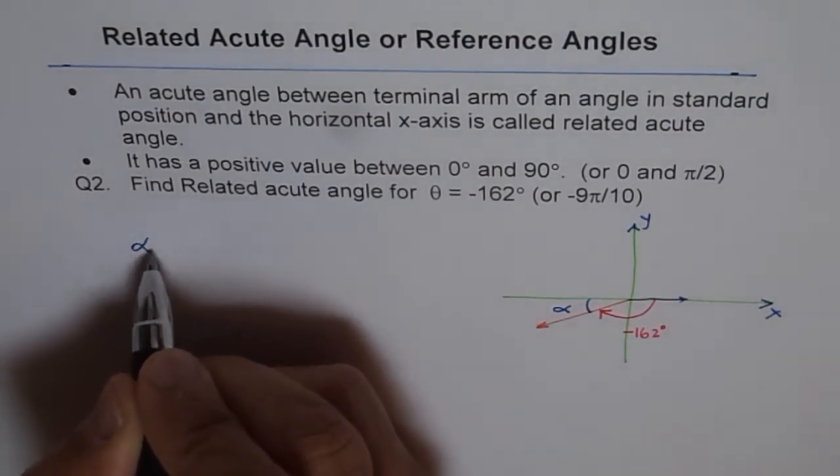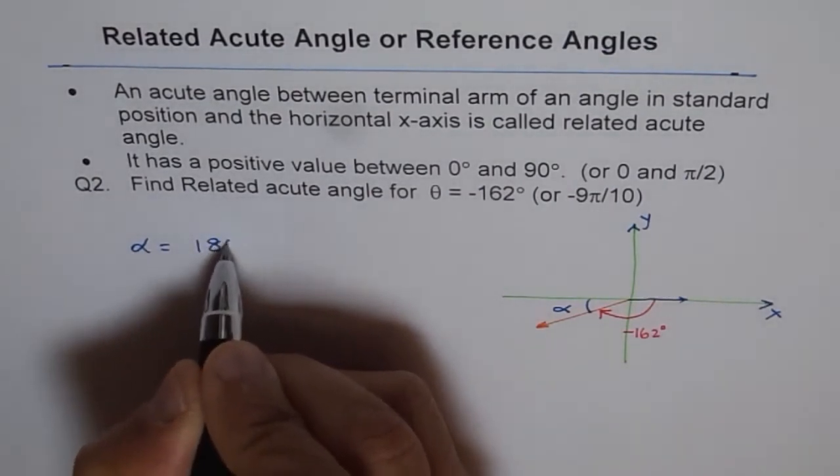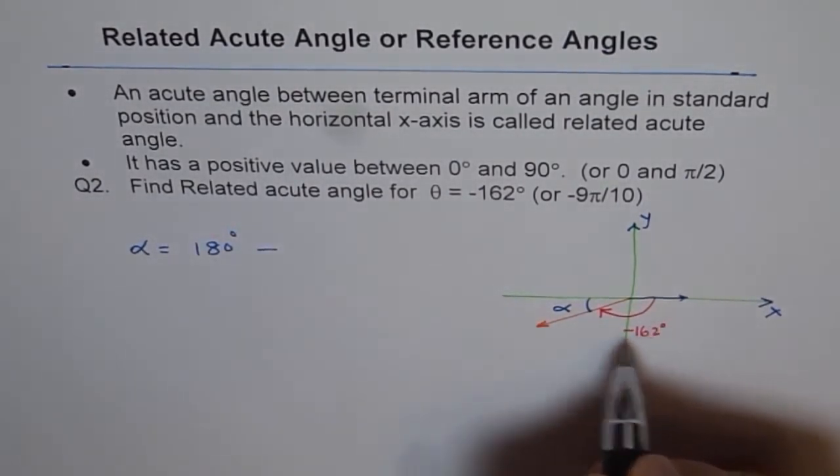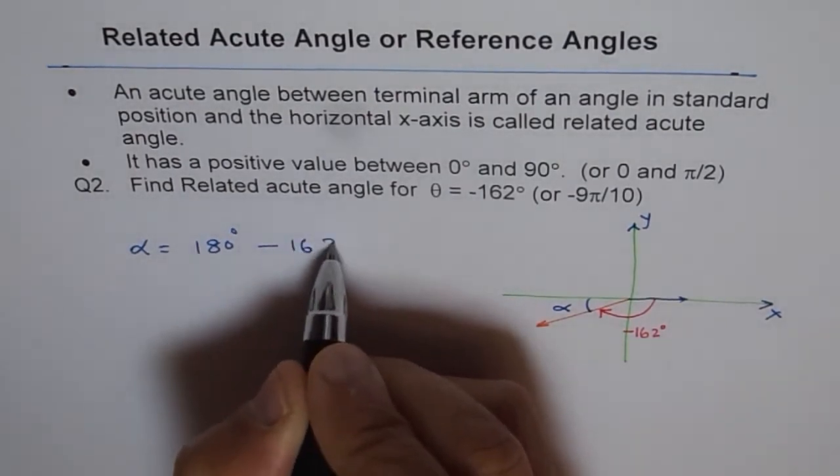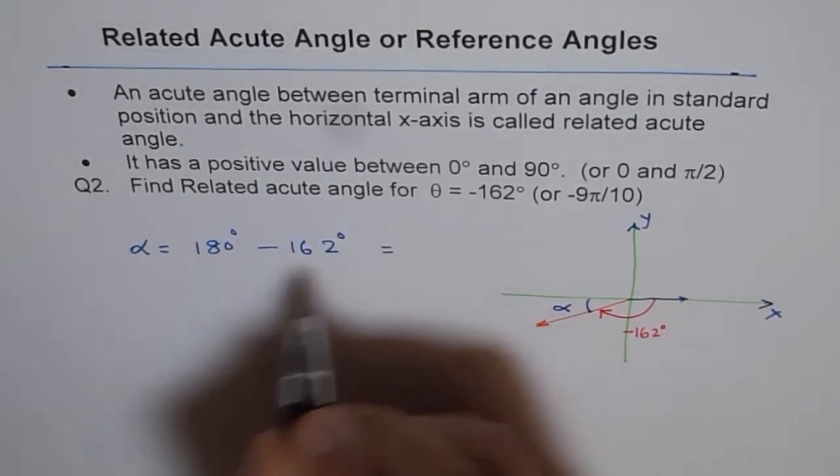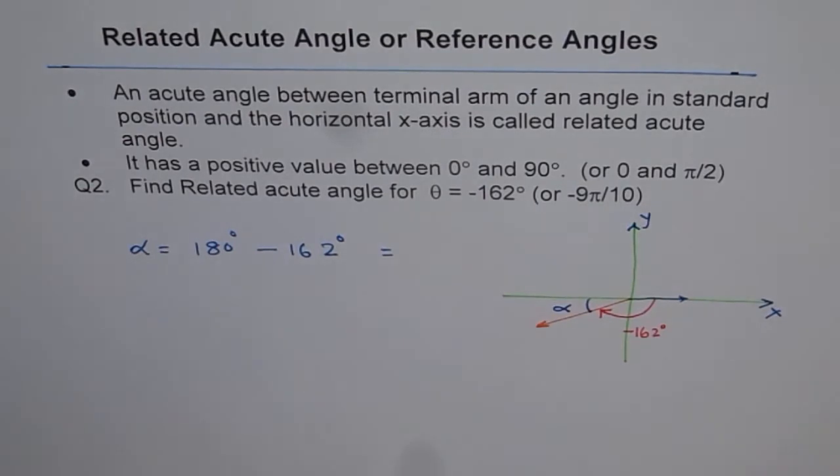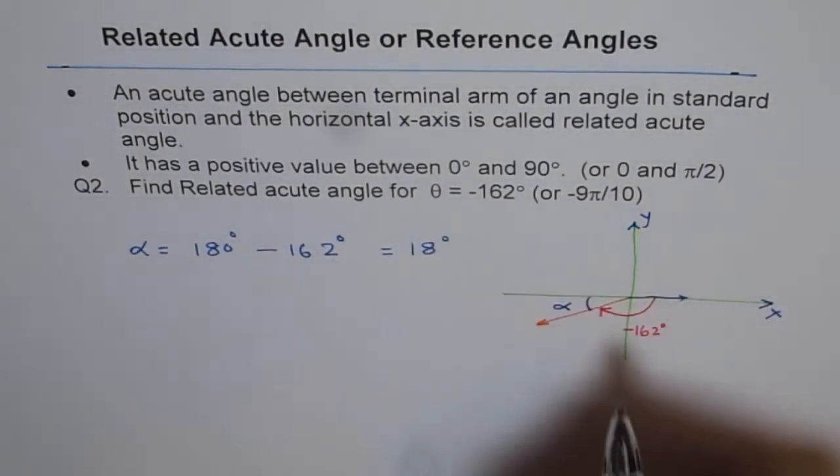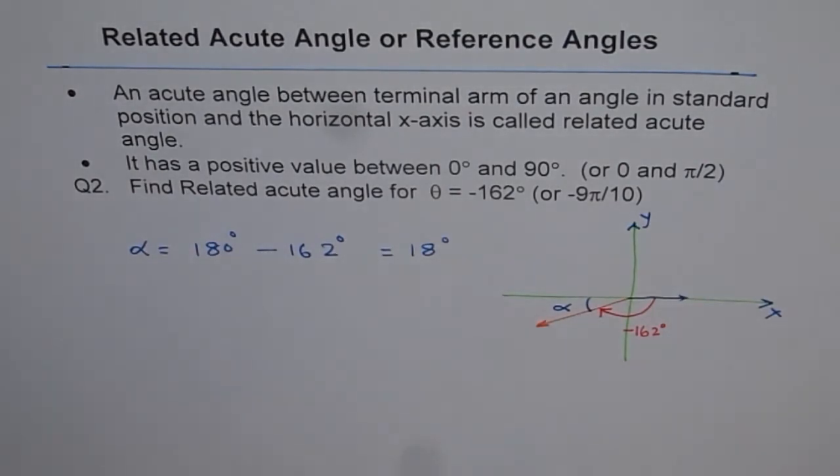So alpha equals 180 degrees minus 162 degrees. So that is the related acute angle. You can use your calculator and figure out the answer. So 180 minus 162 equals 18 degrees. So that is the related acute angle.